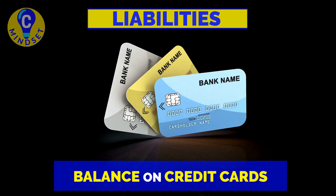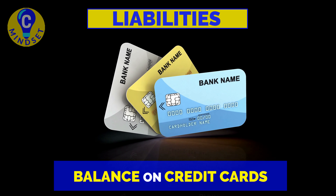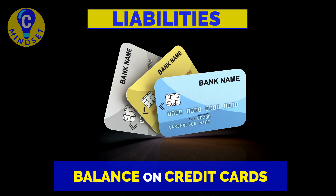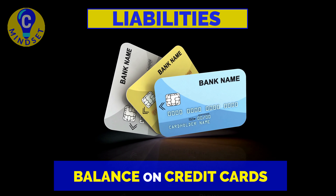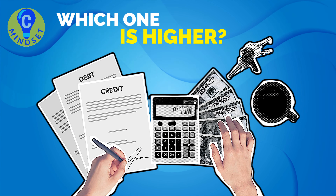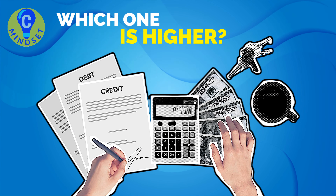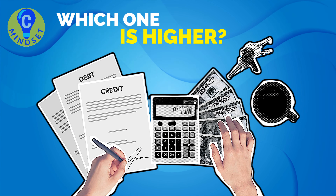To calculate your liabilities, you need to consider the balance of your house and car mortgage, as they are monthly liabilities. Write down the outstanding balance on your credit cards. Consider the monthly payments on all your insurance policies, including life, health, car, and house insurance. Lastly, make a list of any other bills you owe, including utility bills, medical expenses, subscription fees, and taxes. Knowing the value of your assets and liabilities, and determining which one is higher, will show you where you stand financially.